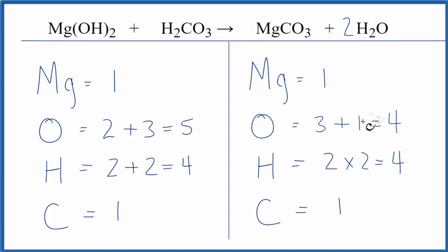Let's update the oxygens. We have 3 oxygens plus 1 times 2 and that gives us 5. And all of a sudden this equation is balanced.